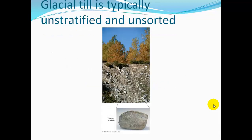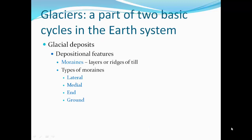Glacial till is typically unstratified and unsorted. In this glacial till area, you'll see cobbles along with smaller and bigger pieces. The larger pieces — you can actually see grooves and places where these rocks were scratched by bumping against other rocks while moving along with the ice.